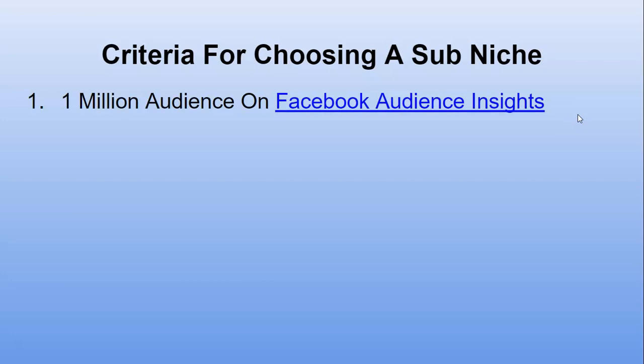Here are the criteria for choosing a sub-niche. We're now moving from talking to actually doing the work. The first criterion: a minimum one-million audience on Facebook Audience Insights. You need a Facebook account to use this. Despite Instagram, Twitter, TikTok, and Snapchat, Facebook is still the biggest platform and keeps the most information about people, which is exactly why we start there.